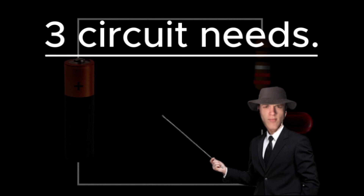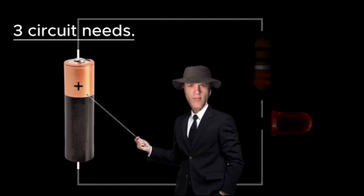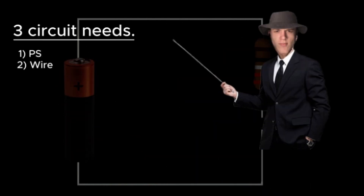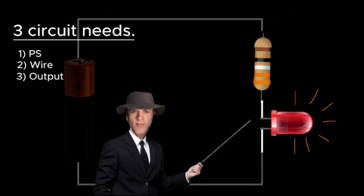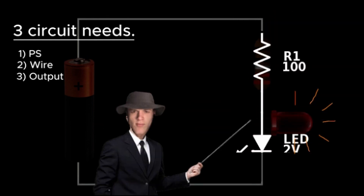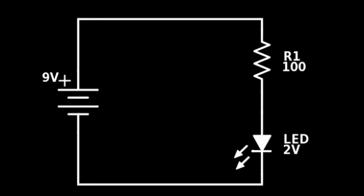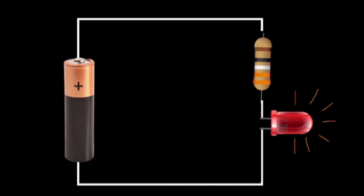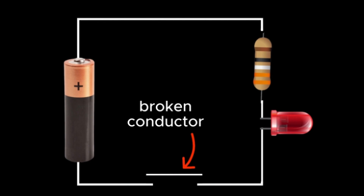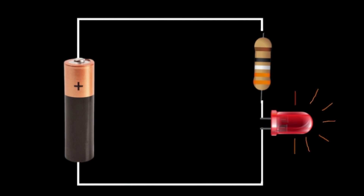There are three main things you need for a circuit to work properly. One, a power supply — it supplies power to the circuit. Two, a conductor or wire that makes the loop of the circuit. And three, an output — something that actually does something useful with the electricity. If you connect these correctly, you get a complete circuit. But the interesting stuff happens when you add a switch into the mix. A switch breaks one of those rules — it disconnects the conductor. So when we turn the switch on, it allows us to control the circuit, and that's a very powerful concept.